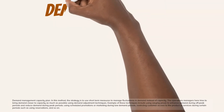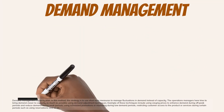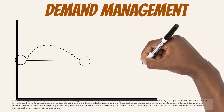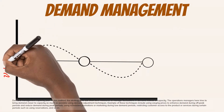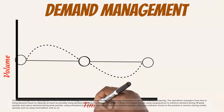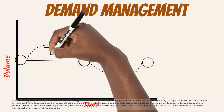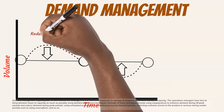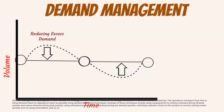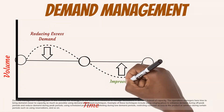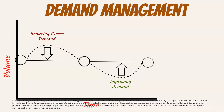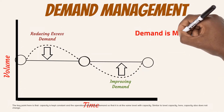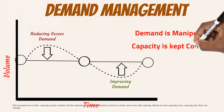In the demand management capacity plan, the strategy is to use short-term measures to manage fluctuations in demand instead of capacity. The operations manager tries to bring demand closer to capacity using demand adjustment techniques. Examples include using varying prices to enhance demand during off-peak periods and reduce demand during peak periods, using scheduled promotions or marketing during low demand periods, and restricting customer access during certain periods such as using reservations. The key point is that capacity is kept constant and the operations manipulates demand so it is at the same level as capacity — similar to level capacity, capacity here does not change.